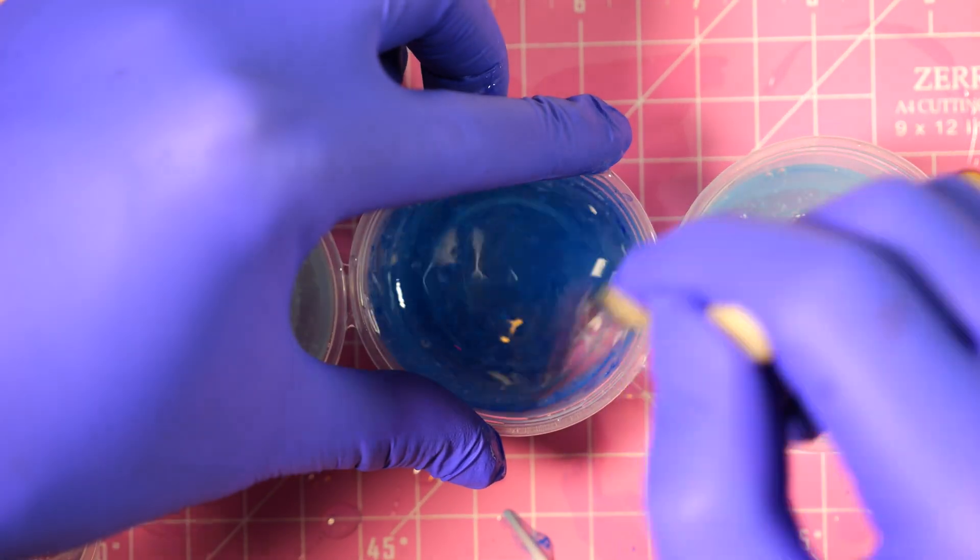To seal the wings together, we're going to add our UV resin. Next, we're going to take it off the tape and cure the other side as well with some UV resin. And the wings are so pretty. I love them.